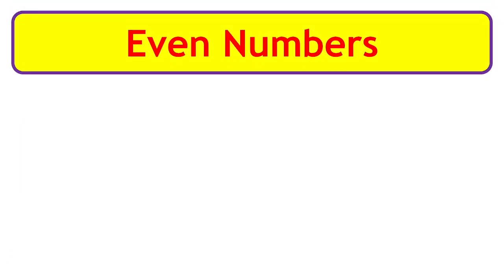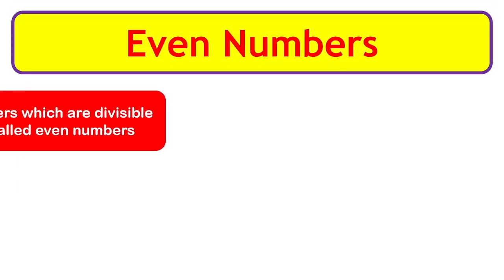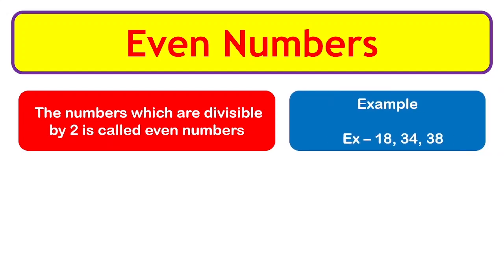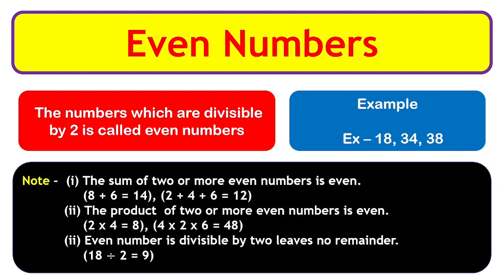Even numbers: the numbers which are divisible by 2 are called even numbers. Examples: 18, 34, 38 — all these numbers are divisible by 2. Note: the sum of two or more even numbers is always even. For example, 8 plus 6 equals 14, and since 8 and 6 are both even, the sum 14 is also even.